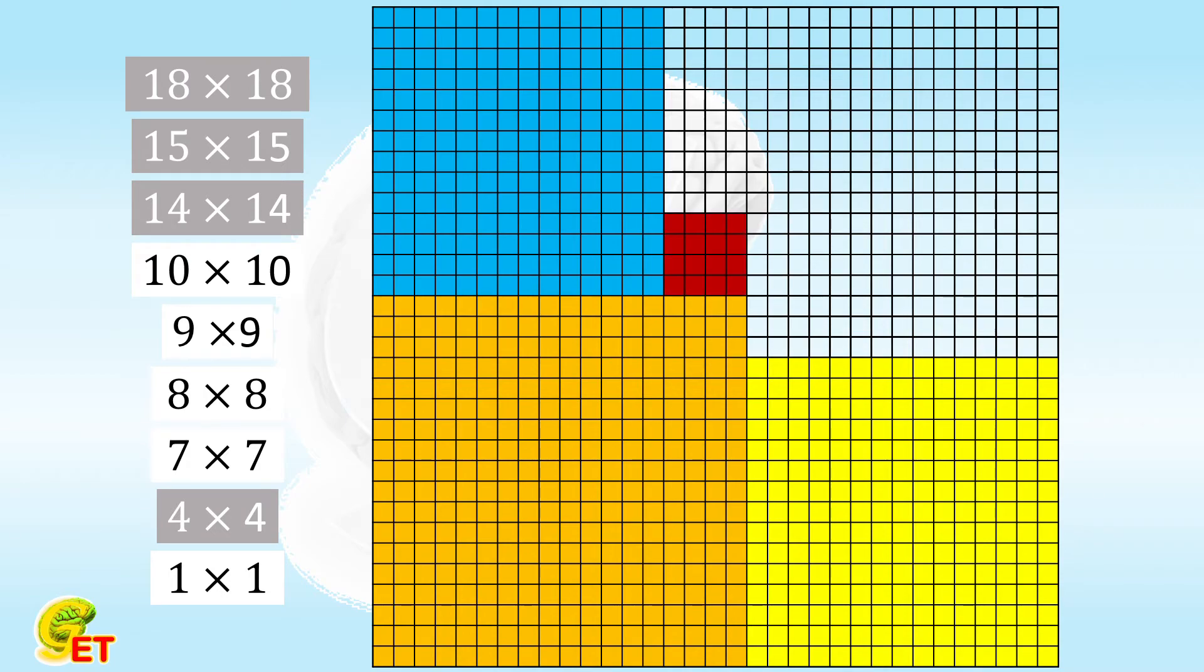Above the small one, there are 10 rows left, so we put the 10 by 10 one above it. Next to it, we certainly arrange the 9 by 9 one.